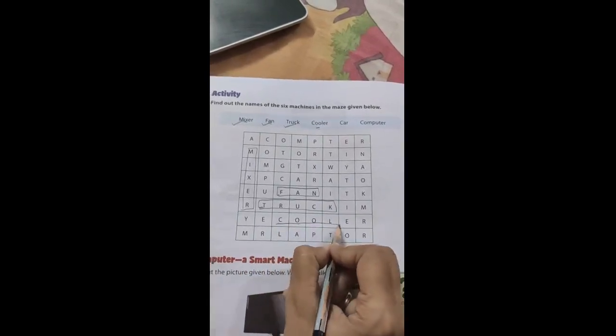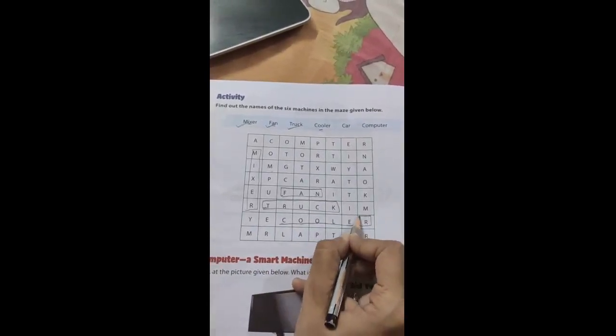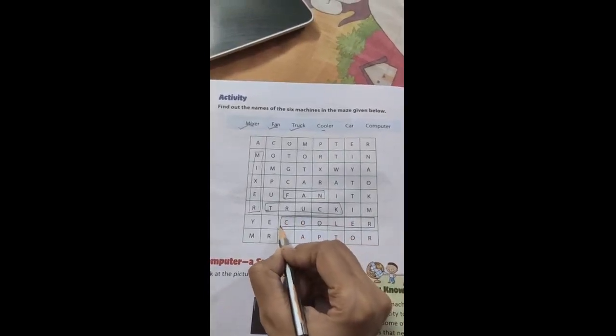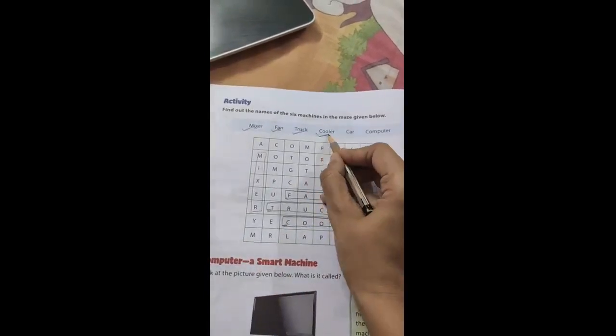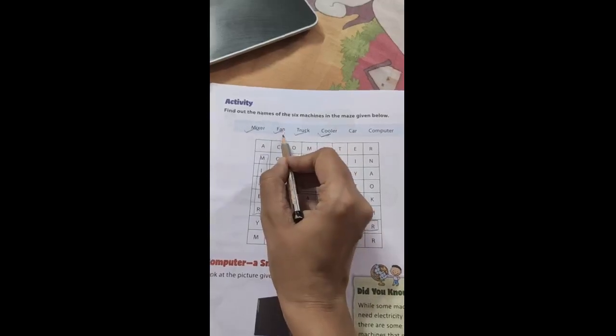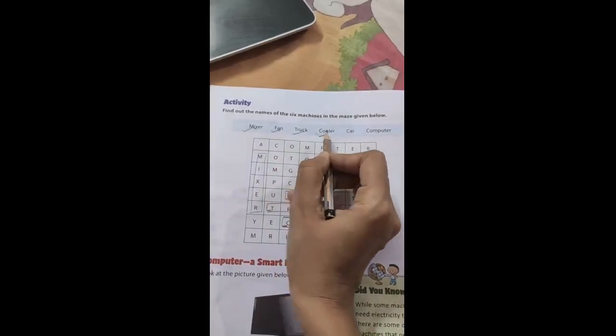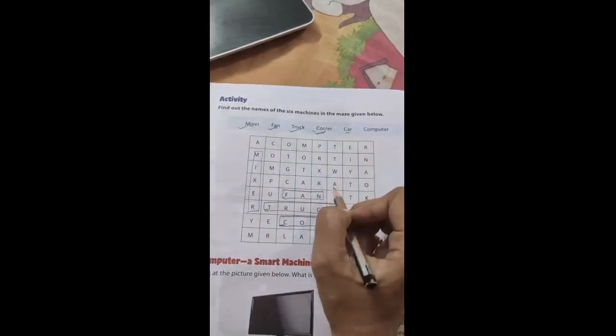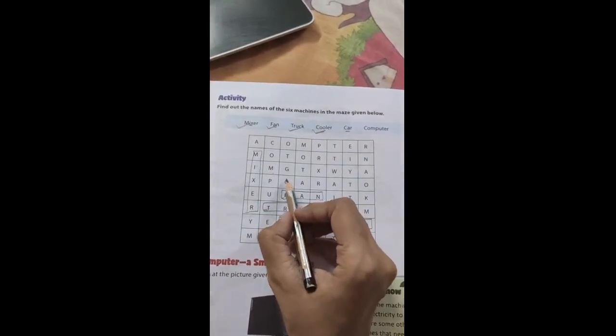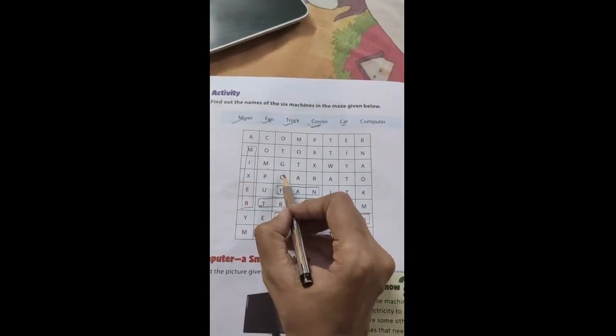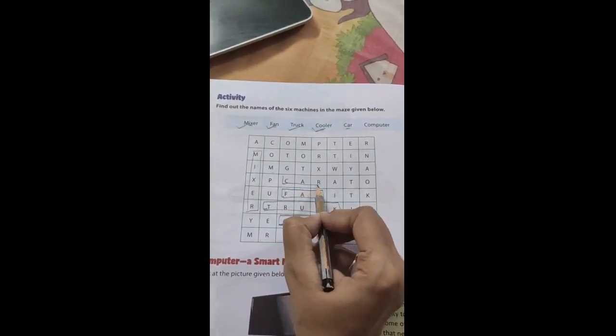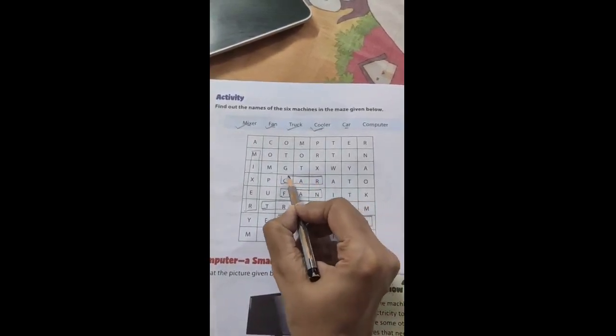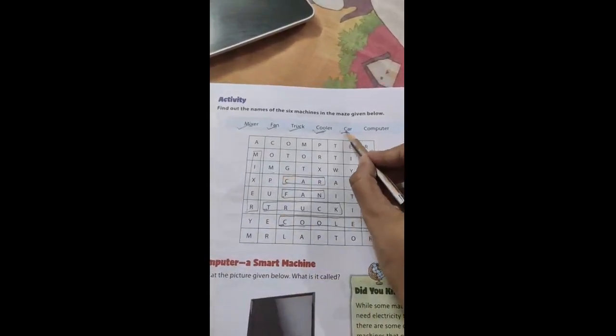This is again the example of one more machine. So we found four examples of machine till now. This is also done: mixer, fan, truck and cooler. Next is very easy, it is car. Do you like to go in car? Do you like to travel in car? Yes, here we got it. Look, just upside of the fan. C-A-R. Car. This is also done dear children.